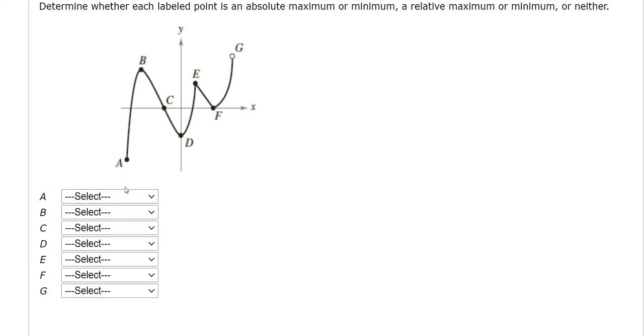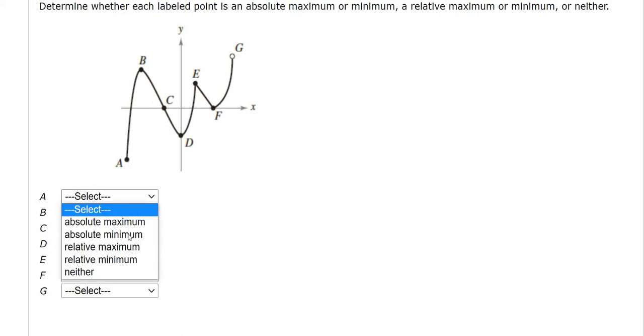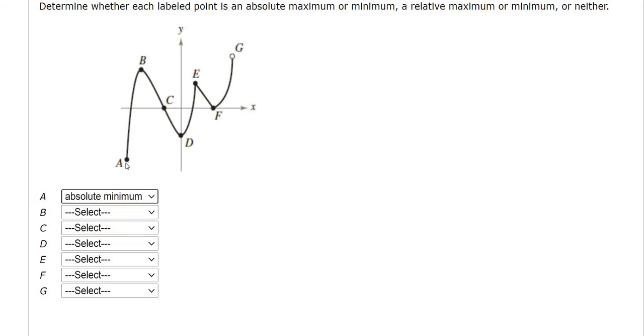So A. What is A? Looking at the graph, A is an absolute minimum. It is the smallest y-value on the graph, so we need to pick absolute minimum. That's one of the choices. There is no y-value smaller than this one, so we will go with that one.